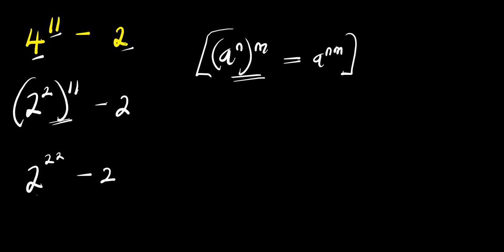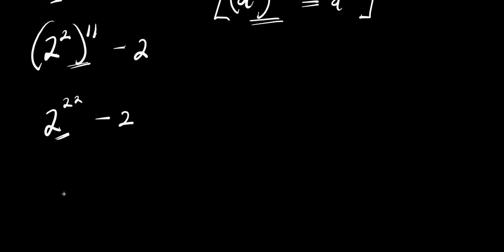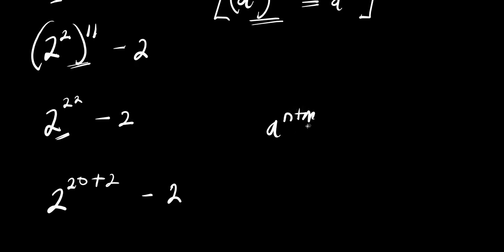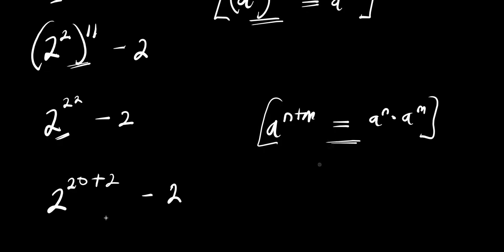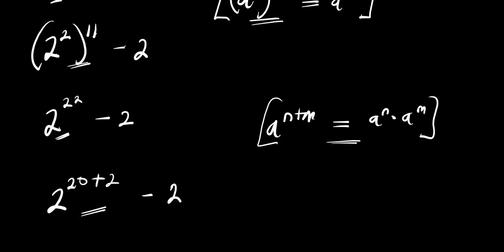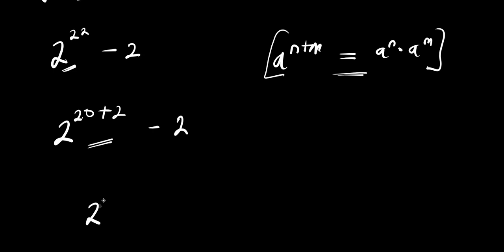To find the value of 2 to the power of 22 might be a bit difficult, so I can express it as 2 to the power of 20 plus 2, which is the same as 22, and we have minus 2. If I have a to the power of n plus m, this equals a to the power of n times a to the power of m. So applying that, I'm going to have 2 to the power of 20 times 2 to the power of 2, minus 2.